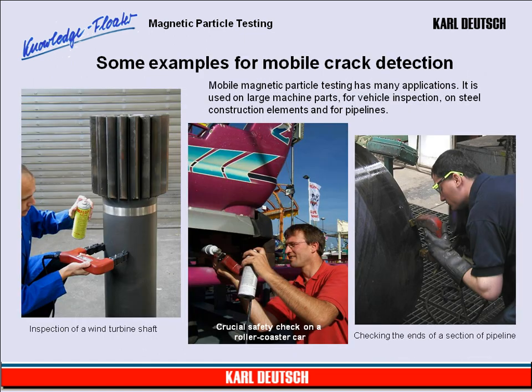Some examples of mobile crack detection. Mobile magnetic particle testing has many applications. It is used on large machine parts, for vehicle inspection, on steel construction elements, and for pipelines. The pictures show the inspection of a wind turbine shaft, a crucial safety check on a roller coaster car, and checking the ends of a section of a pipeline.